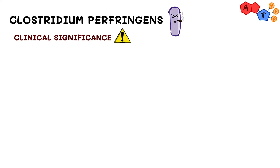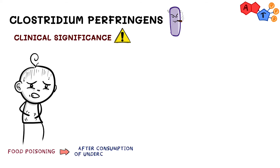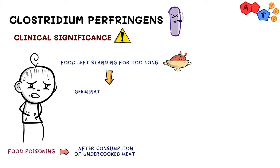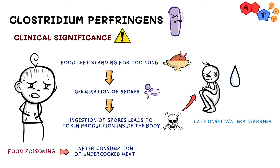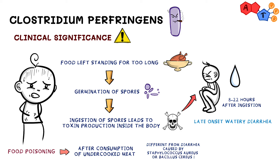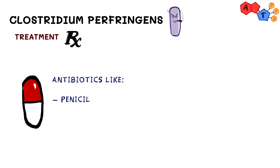Clostridium perfringens can also cause food poisoning, especially after consumption of undercooked meat. Food left standing too long allows spores to germinate, and ingestion of those spores leads to toxin production inside the body. This causes late-onset watery diarrhea that happens usually 8 to 22 hours after ingestion. Keep in mind this differs from diarrhea caused by Staph aureus or Bacillus cereus, which involve preformed toxins and cause early-onset diarrhea. Treatment includes penicillin and clindamycin.